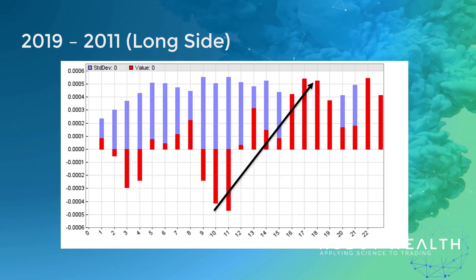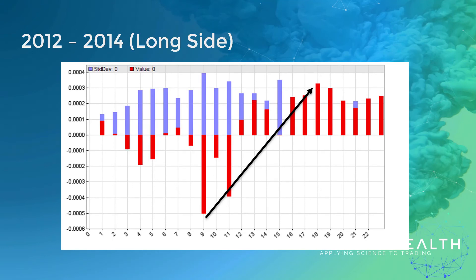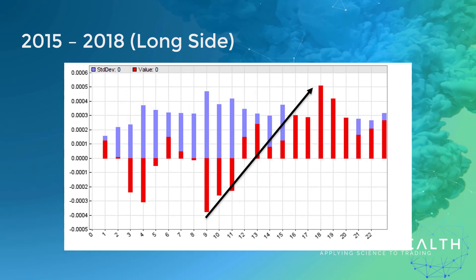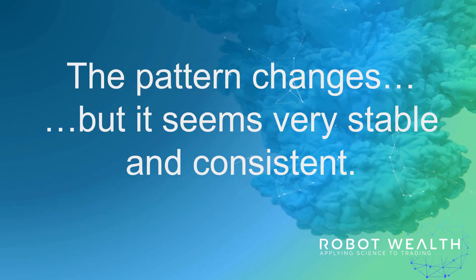Here's 2009 to 2011 — we see a clear effect, similar to what we saw in the summary data. Here's 2012 to 2014 — again, we see a similar effect. And 2015 to 2018, the last period in our data — again, we see that effect, and it's quite a marked, consistent effect. The pattern changes across time, but it seems very stable and consistent. This is another tick in the box: we have an economic rationale, we know someone else is trading it, and we see the effect being very stable across time.